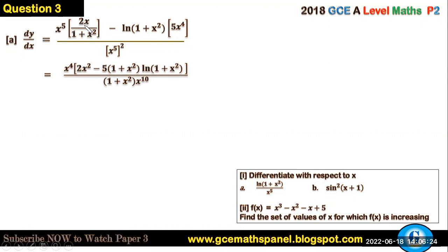Now we have multiplied this term here by 1 + x², so we are left just 2x² minus. So here we have 5 ln(1 + x²) x⁴ times ln times 1 + x² rather so this is it.